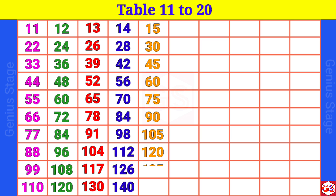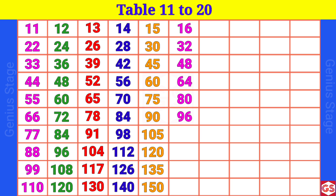15 10s are 150. 16 1s are 16, 16 2s are 32, 16 3s are 48, 16 4s are 64, 16 5s are 80, 16 6s are 96, 16 7s are 112, 16 8s are 128, 16 9s are 144.